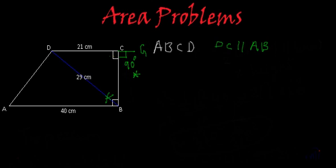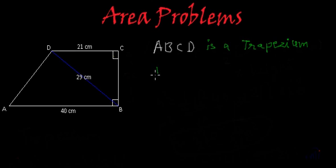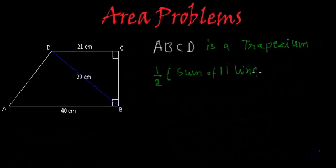A figure where one pair of opposite sides are parallel is called a trapezium. So ABCD is a trapezium. The formula for the area of a trapezium is 1/2 × (sum of parallel sides) × height.